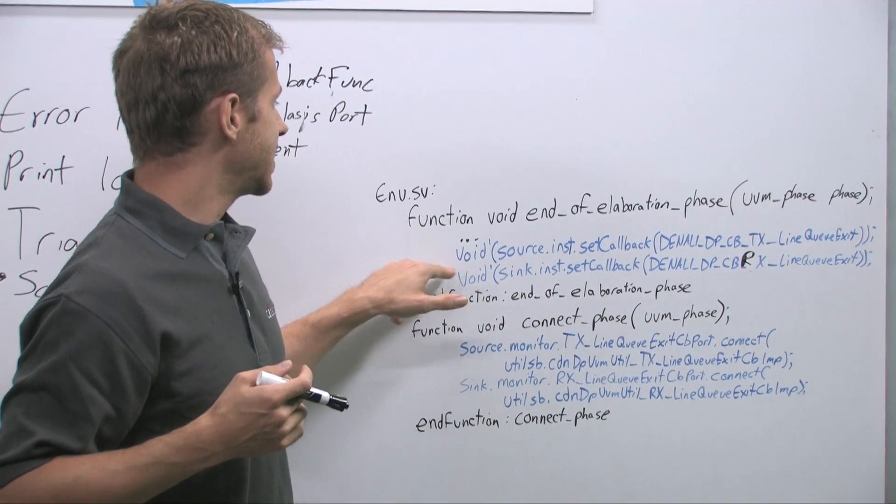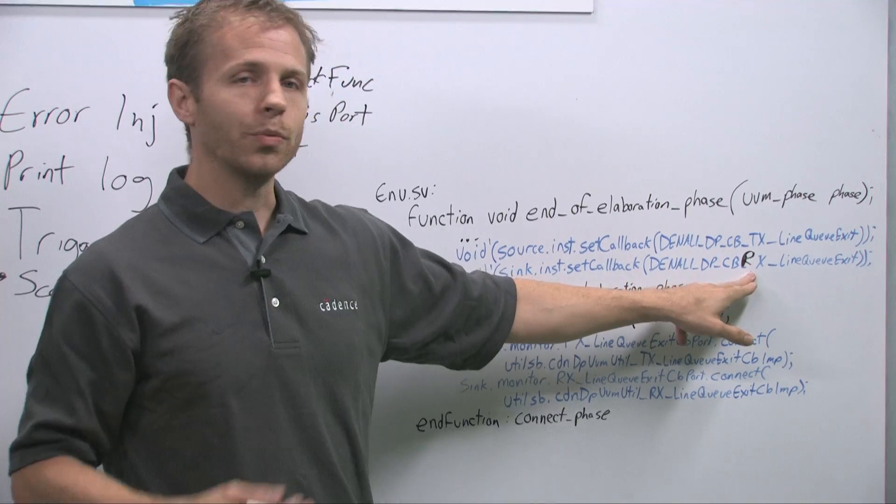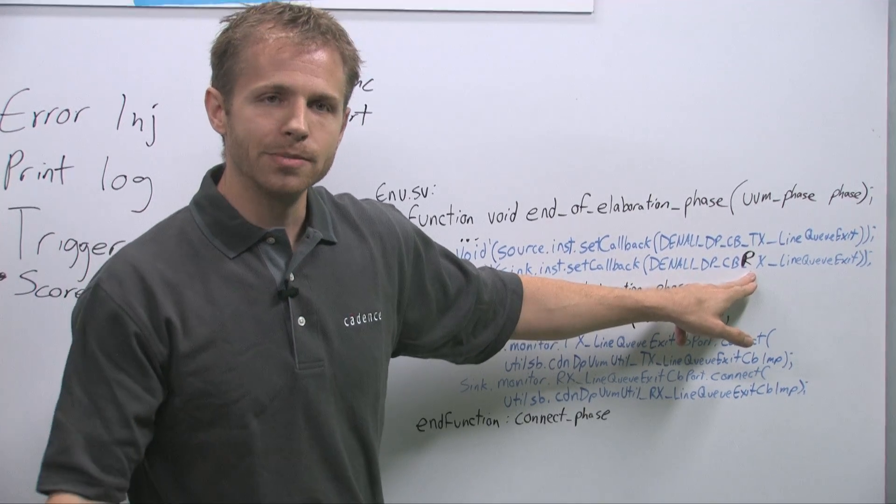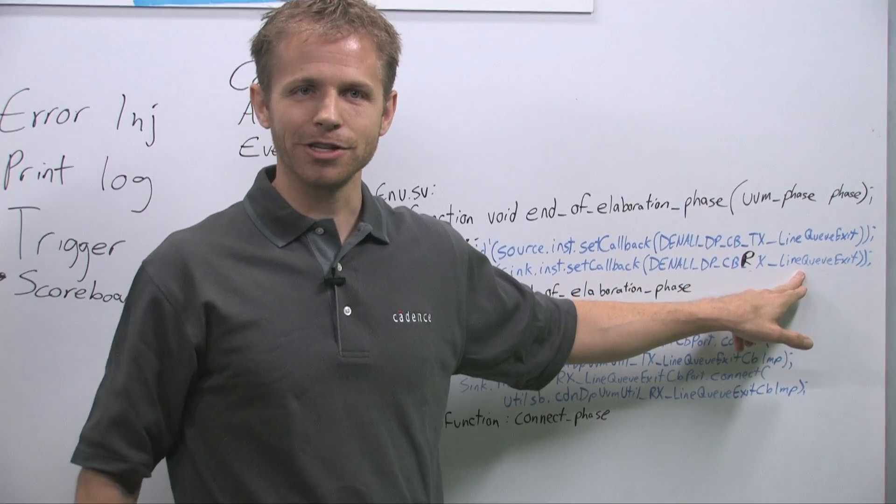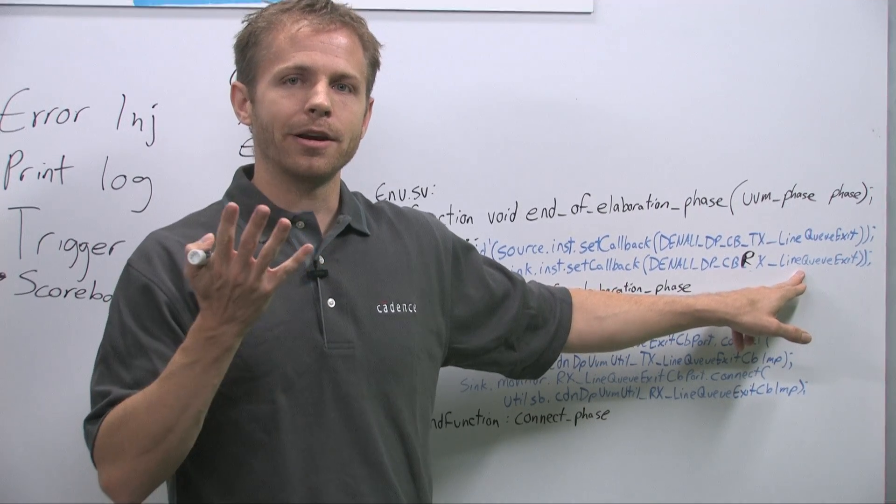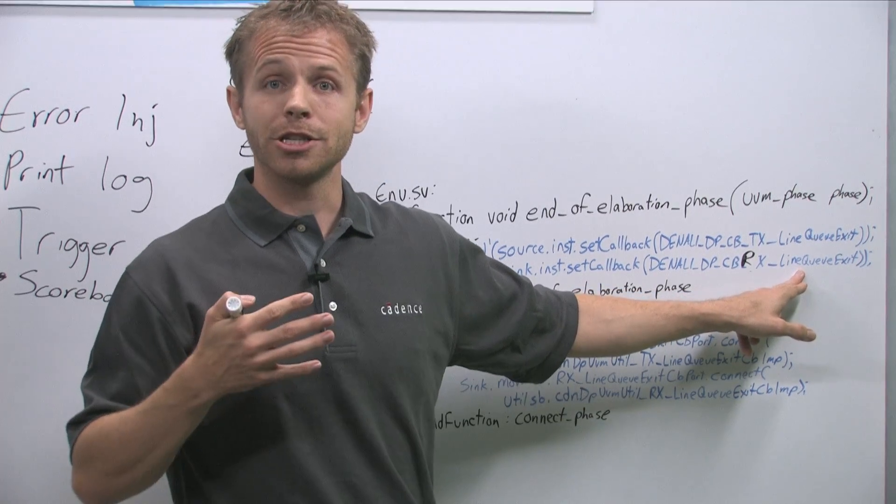Same thing with the sync agent. When the sync agent receives the data, we're enabling this callback. When we get the data, originally when it comes in on the wires it'll be raw data, but when it gets to this RX line queue exit callback function, it's already been propagated enough through the protocol that the data is available in the RGB fields.